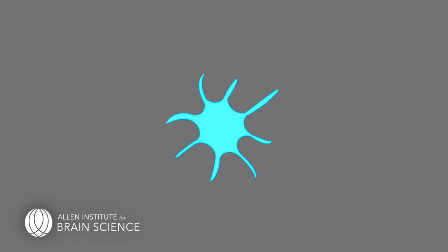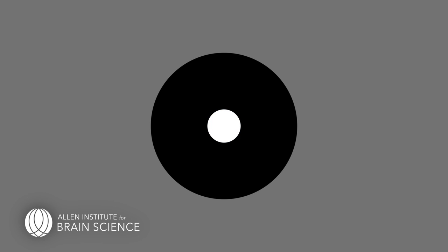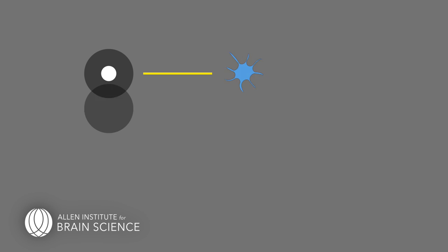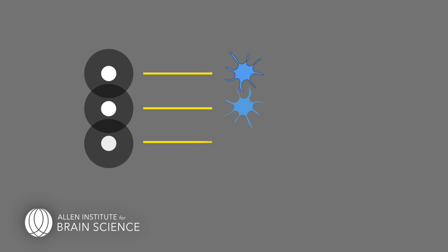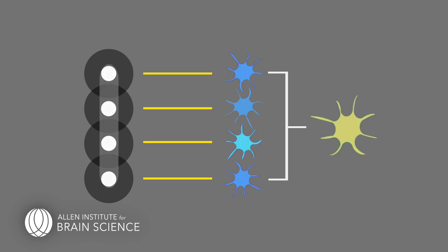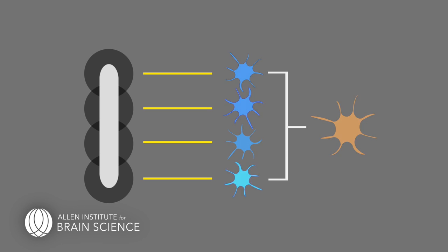The very first neurons in the visual pathway respond best to bright spots on dark backgrounds, or dark spots on light backgrounds in certain locations of the visual field. Many neurons in primary visual cortex respond to edges, and one hypothesis is that they do so by receiving input from a set of neurons, each of which responds to bright spots on a dark background, arranged in a line. If all of these neurons respond, they send a signal to another neuron that will respond when all of its input neurons are firing.